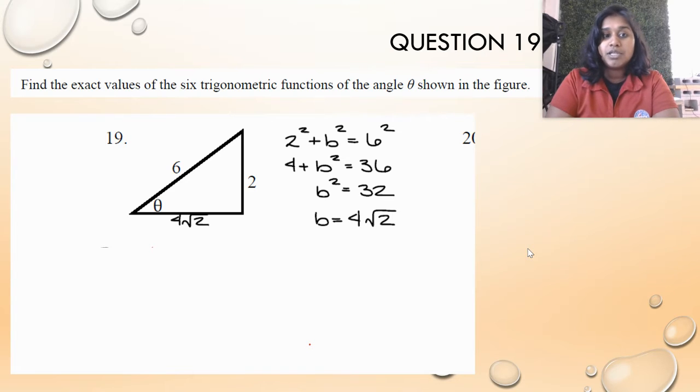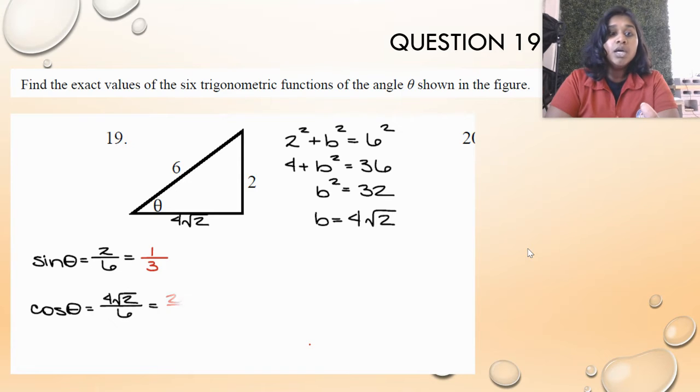So remember I'm using SOHCAHTOA, so sine is opposite over hypotenuse, so 2 over 6 simplifies to 1/3. Cosine is adjacent over hypotenuse, so 4√2 over 6, which could simplify to 2√2 over 3.